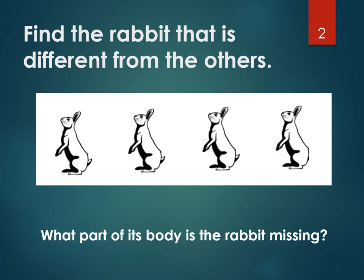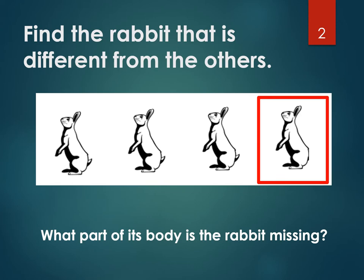Here is the first question. I have a bunch of rabbits here. Find the rabbit that is different from the others. Look very carefully — there's one rabbit that's missing something. Can you notice which rabbit is missing what? Did you point to this one? Yes, if you did, you are correct. Can you tell me what body part the rabbit is missing? It's missing its tail. Very good. Let's go to the next question.